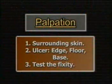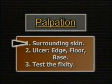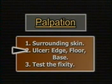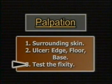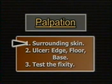Now proceed to palpation. First, palpate the surrounding skin for temperature and tenderness. Then wear gloves and palpate the ulcer — its edge, floor, and base — and lastly test the fixity of the ulcer to the structures in its base. Begin by noting the temperature of the surrounding skin, palpating with the back of the fingers and comparing with the opposite normal side.